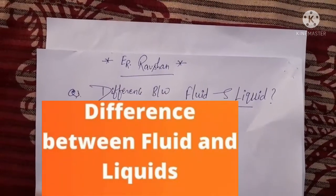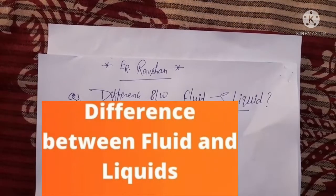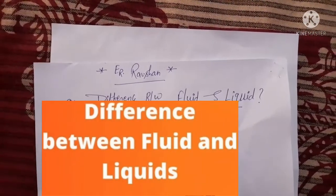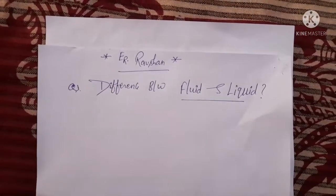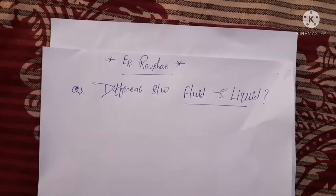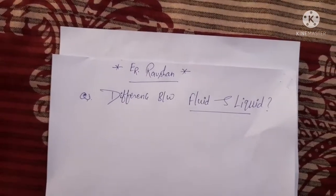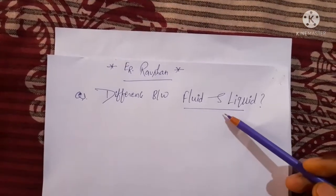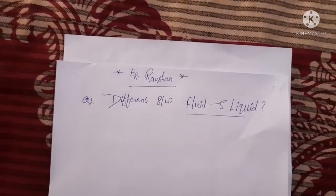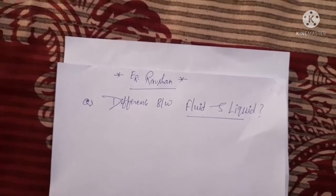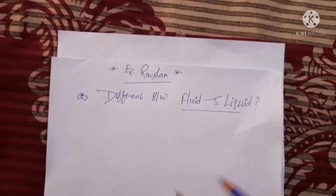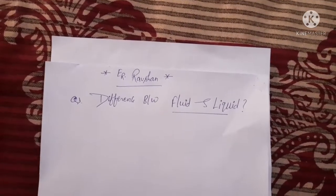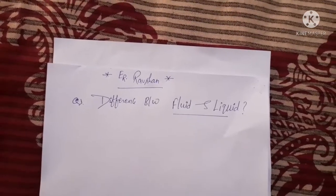Hi friends, here we make a short video to identify fluid as well as liquid — that means the difference between fluid and liquid. So what is a fluid? Fluid is a state of certain substances, or you can say it is a type of matter. While liquid is one of the three phases of matter: solid, liquid, and gas. So liquid is a state of matter.